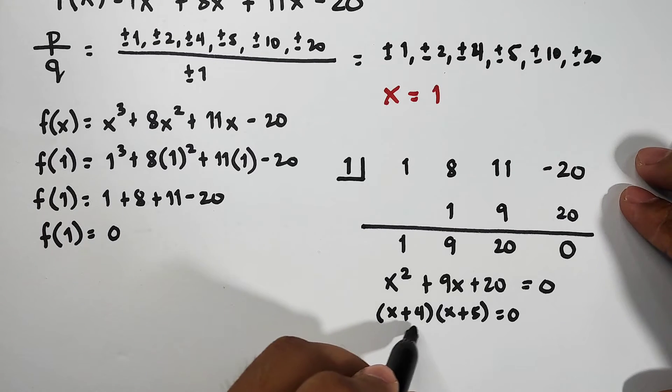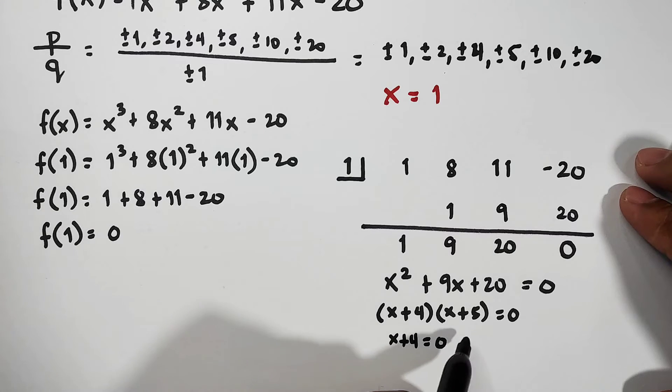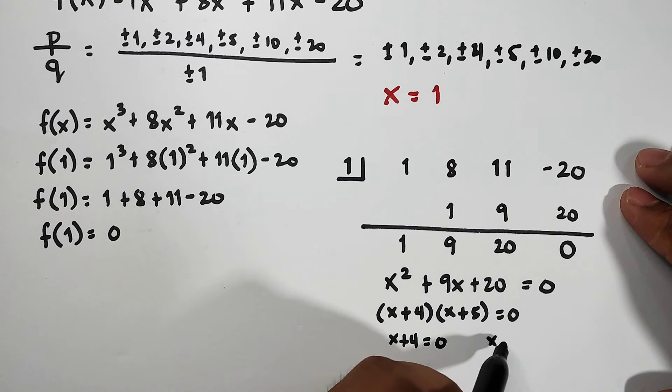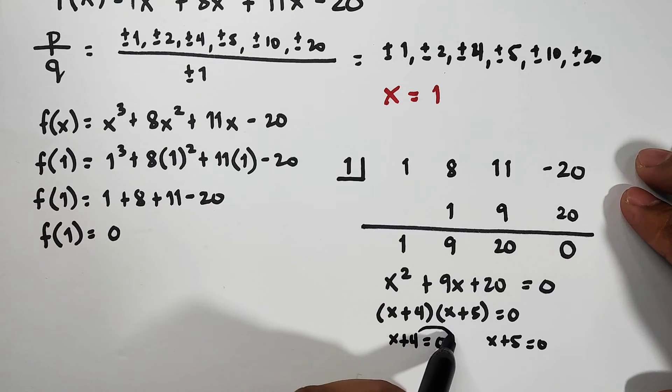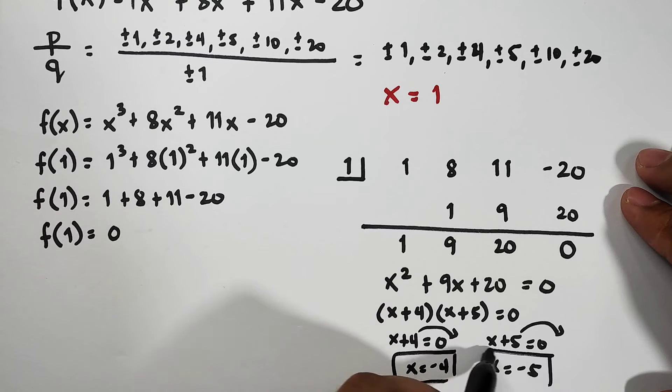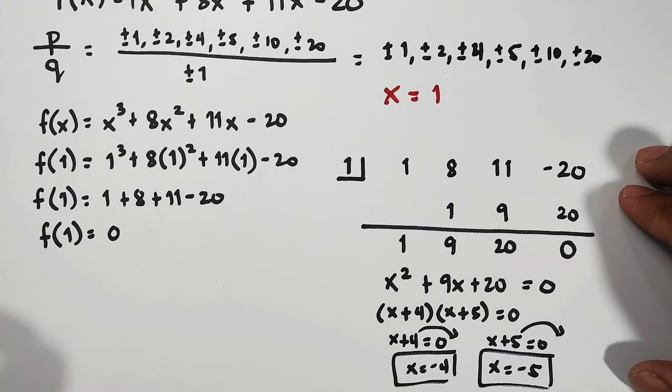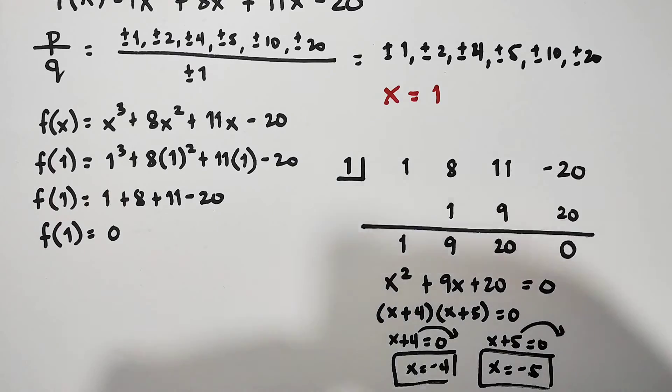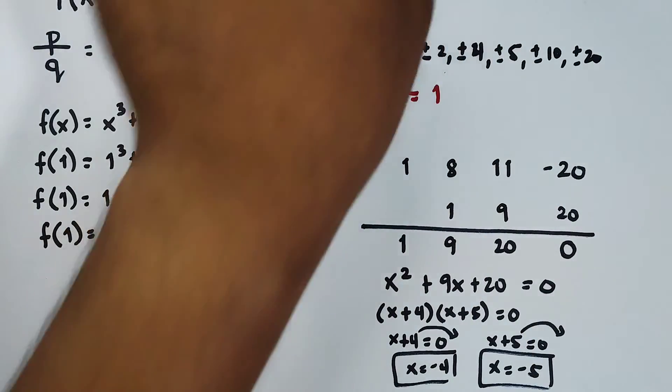So what we'll do, let me move this a bit: it will become x + 4 = 0. We equate both factors by 0. Then x + 5 = 0. So transpose this: x = -4, and transpose this: x = -5.